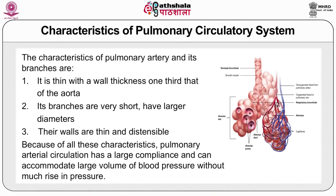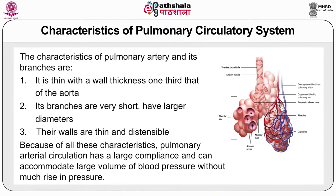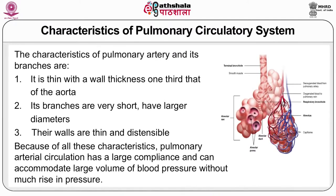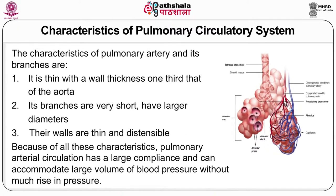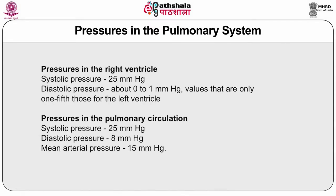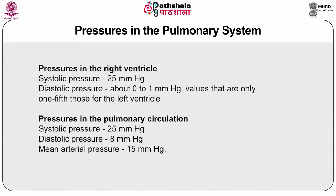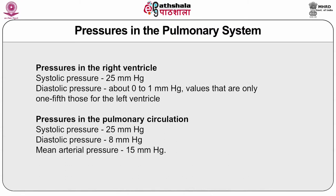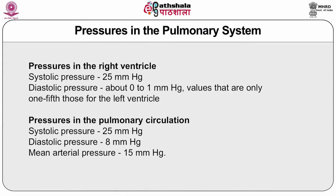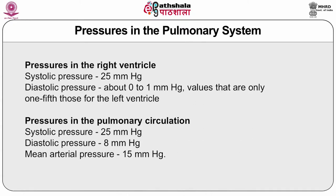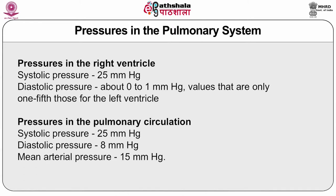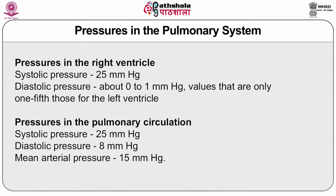The walls are thin and distensible. Because of all these characteristics, pulmonary arterial circulation has a large compliance and it can accommodate large volumes of blood without much rise in pressure. The right ventricle systolic pressure is about 25 millimeters of mercury and diastolic pressure averages about 0 to 1 millimeter of mercury — values that are only one fifth of those of the left ventricle. In the pulmonary circulation, systolic pressure is 25 mmHg, diastolic pressure is 8 mmHg, and mean arterial pressure is 15 mmHg.